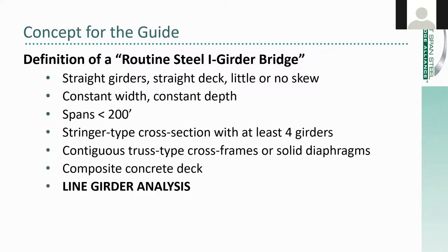We had to define a very limited box that this guide would work in. A large number of bridges in the US fall into a category that can loosely be called routine — straight bridges with little or no skew, no geometric complexities, and common elements assembled in simple framing patterns. The limitations listed all point to a simple choice for analysis methods: line-girder analysis. We set up the definitions of a routine steel I-girder bridge to be a bridge that could, and in fact should, be designed using line-girder analysis.